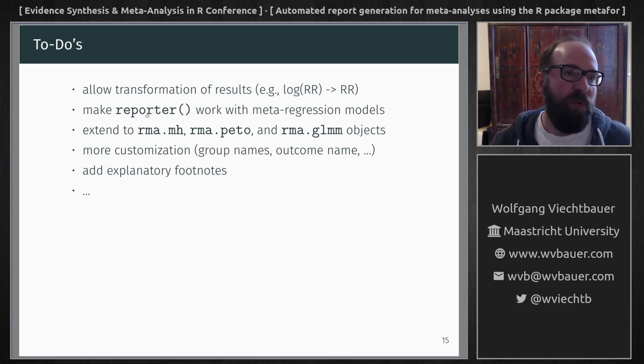Also at the moment the reporter function does not work with meta-regression models. So this is something that I would like to add. And also to extend this function to work with other model objects like the rma.mh function which uses the Mantel-Haenszel method. So right now it only works with the rma function. And maybe some more customization. Maybe an option to include explanatory footnotes to make this even more useful.